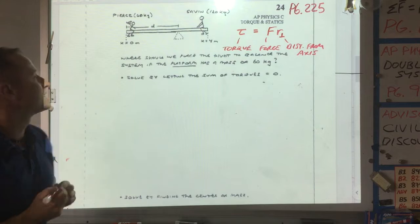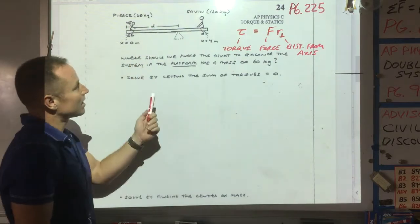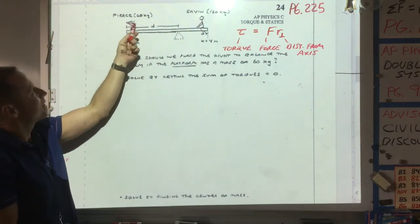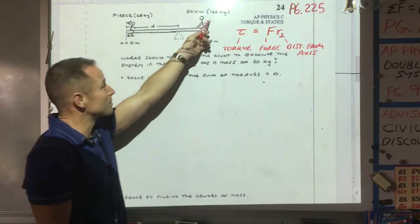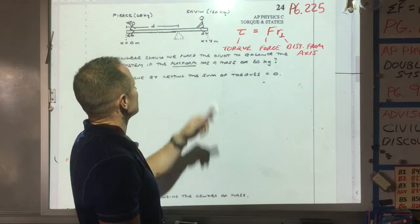To see how this plays out, let's look at this little context where here's me, 60 kilograms on one side of a plank. Here's a former student, Wes Gavin, 120 kilograms on the other side of the plank.